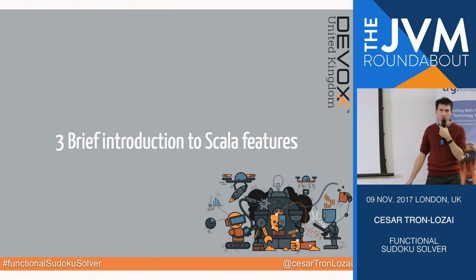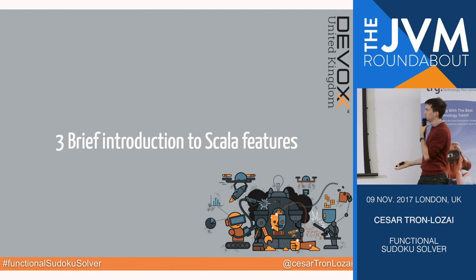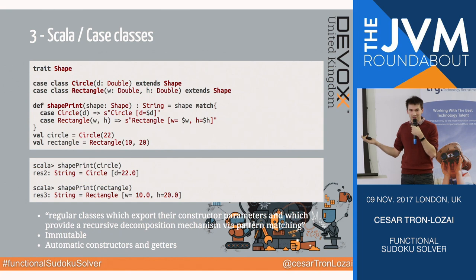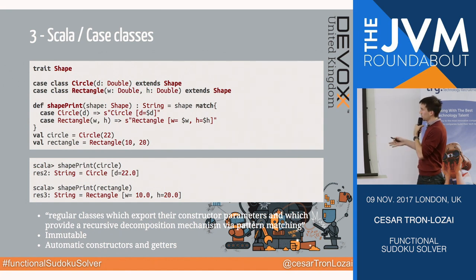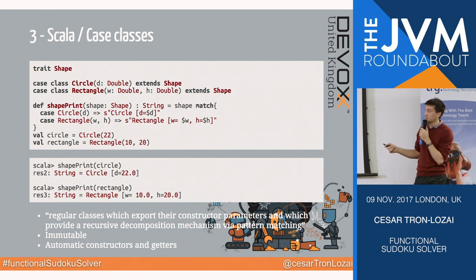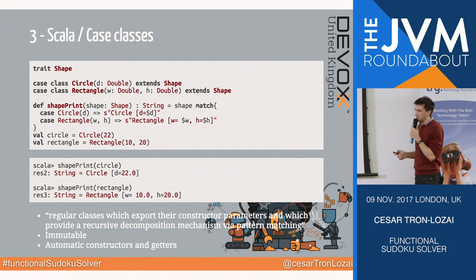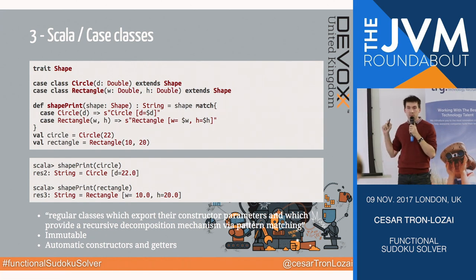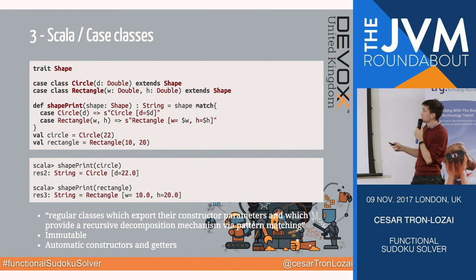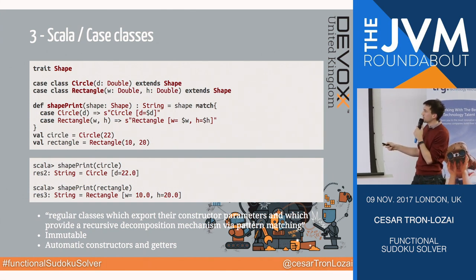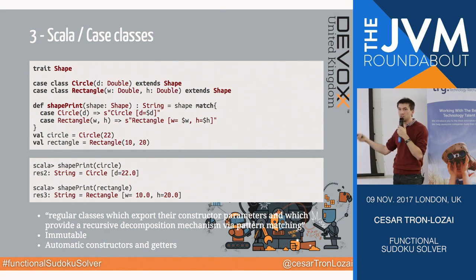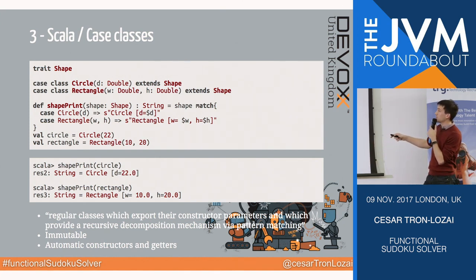Before we actually write the solver, we need to learn some features of Scala, so we'll do a brief introduction. The first thing in Scala is called a trait and case classes. The trait is like an interface in Scala — here I have a shape, it would be an interface in Java, in Scala it's a trait. Case classes are basically telling Scala what are the possible implementations of that interface. We have some syntactic sugar compared to Java: I don't need to declare constructors, getters, and setters. I just write the case class — say circle with D a double extending shape — and that gives me a constructor, a getter, a setter, and it's an immutable data structure. So for my shape I have a circle and a rectangle.